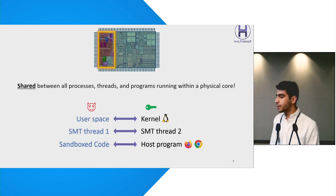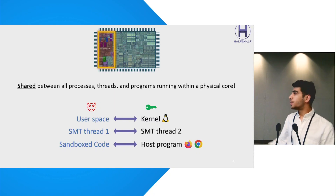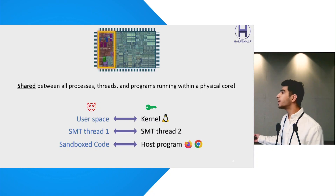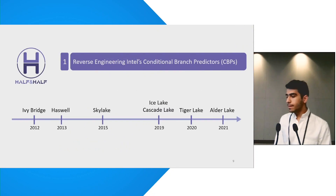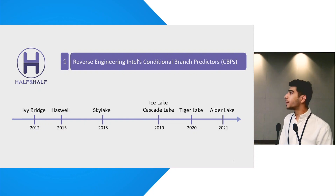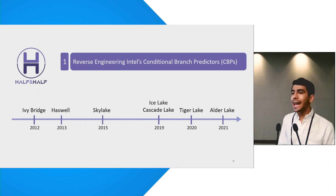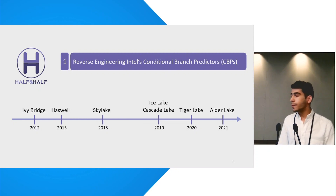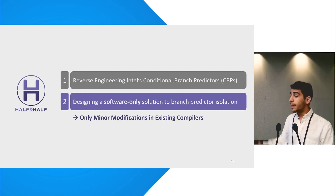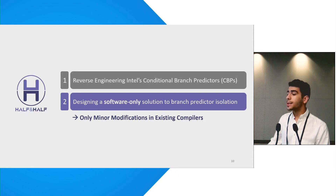Since there is only one branch predictor per physical core, it is shared among all processes and threads running on that core, creating a potential vulnerability susceptible to side channel attacks. A malicious entity could exploit this to breach the isolation between user space and kernel code, between SMT threads, or even between sandbox code and the host program. To tackle this problem, we revealed for the first time a comprehensive picture of the branch predictor for all of Intel's flagship processors going back more than a decade, disclosing key information like their size, structure, and exact indexing functions. Based on that, we propose Half-and-Half, a novel software-only solution for branch predictor isolation that requires no hardware or ISA changes.